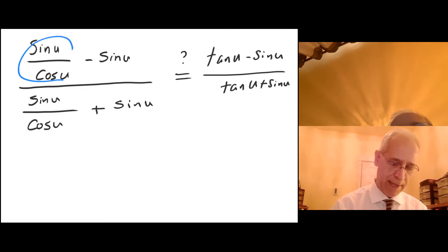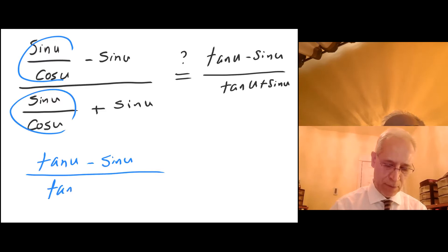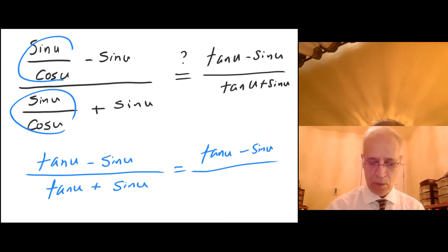So yeah, look at this. This is tangent of u minus sine of u over tangent of u plus sine of u, and that certainly equals to itself, which is tangent of u minus sine of u over tangent of u plus sine of u. Okay, this happened to be a lucky one. All right, thanks.